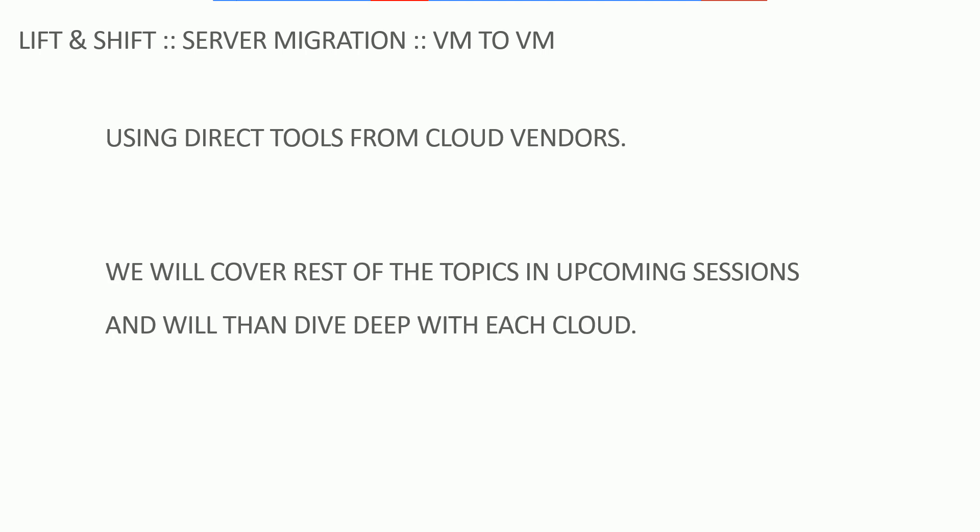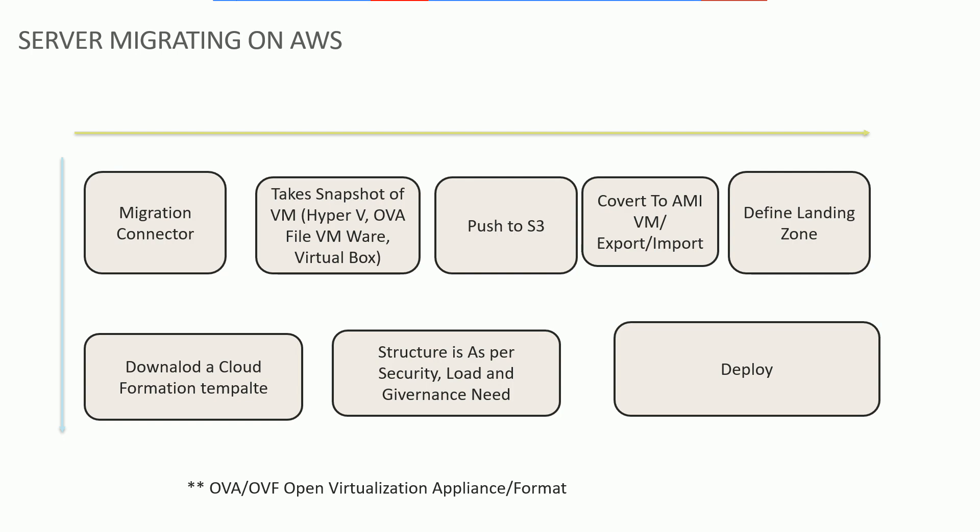Configuring security, billing monitoring, governance rules, and alerts are very important. If you simply move your VM, set up the landing zone, but have no strategy on billing monitoring and governance rules, it will ruin your business because it will charge heavily. So today we'll cover using direct tools from cloud vendors. I'll take you through an AWS example and give you links for further study for AWS, Azure, and GCP. We'll cover the other topics — DevOps and containerization — in upcoming sessions.